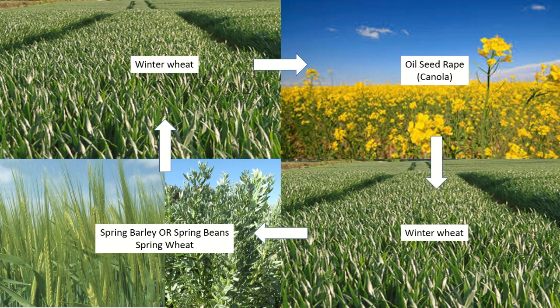From wheat, we will then go to a spring crop — it will always be a spring crop. It could be spring barley if it's light land, or spring beans or spring wheat if it's heavier land. Spring beans perform well on heavy land but suffer from fusarium foot rot and nematodes, meaning you can't grow it too tightly — every six years rather than every four. Spring barley is better grown on light land. In this particular case, we've gone for spring wheat.